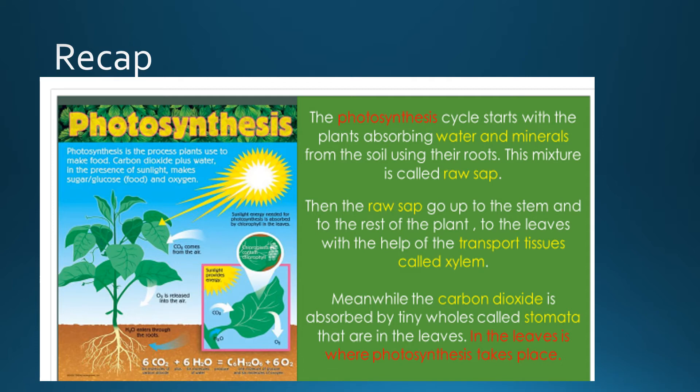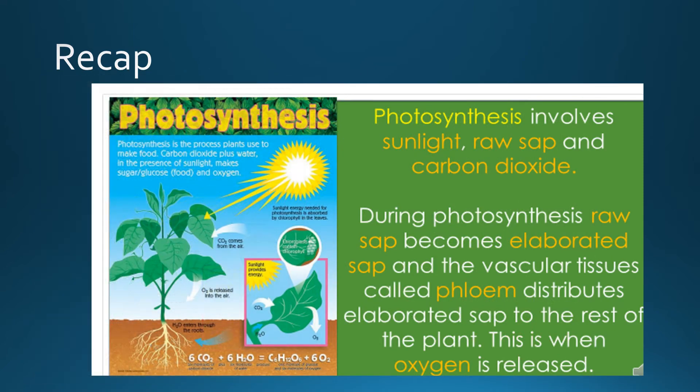Meanwhile, carbon dioxide is going to be absorbed by the tiny holes that we call stomata, which are present in the leaves. In the leaves is where photosynthesis takes place. For photosynthesis to happen, plants need sunlight, carbon dioxide, and water and minerals from the soil. So photosynthesis involves sunlight, raw sap, and carbon dioxide.